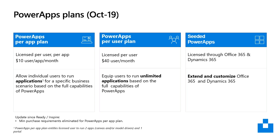The Power Apps Per App Plan allows individual users to run applications for a specific business scenario, but still based on the full capabilities of Power Apps. Previously, Power Apps Plan 1 only gave you limited functionality. The Power Apps Per User Plan gives users the ability to run unlimited applications, also based on the full capabilities of Power Apps. The seeded Power Apps allow you to extend and customize Office 365 and Dynamics 365, which is also a change from the previous use rights.